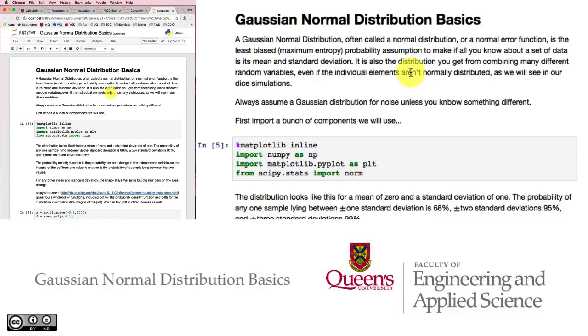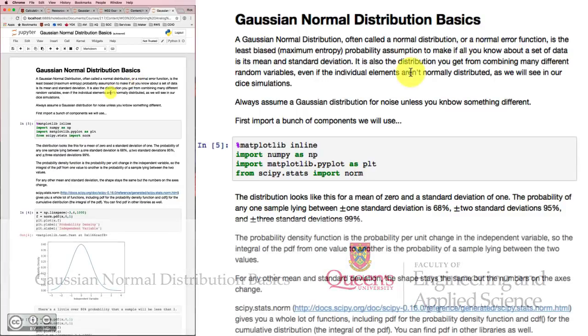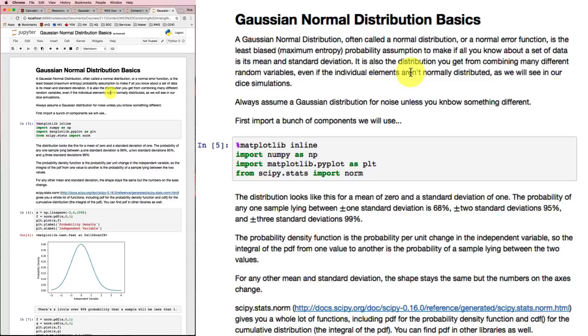When we make measurements, we never get exactly the right value. We've always got some noise associated with those measurements. And that noise will usually be distributed around a mean value that should be a pretty good measurement.